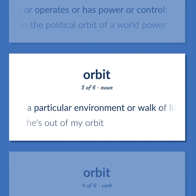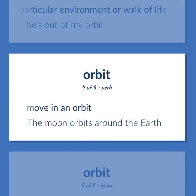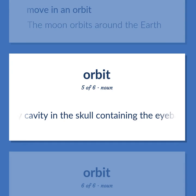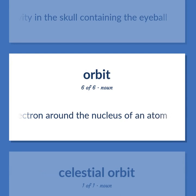Orbit: A particular environment or walk of life — example: He's out of my orbit. Also: to move in an orbit — the moon orbits around the Earth. Additionally, the bony cavity in the skull containing the eyeball, and the path of an electron around the nucleus of an atom.